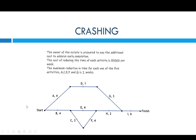The owner of the estate is prepared to pay the additional cost to achieve early completion. The cost of reducing time of each activity is $5,000 per week. The maximum reduction in time for each of the five activities — A, C, E, F, and G — is two weeks. So we can work with C and F, reducing them by two weeks maximum. That means C will become one week and F will become two weeks.